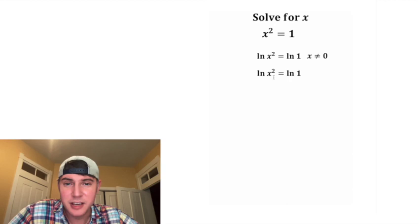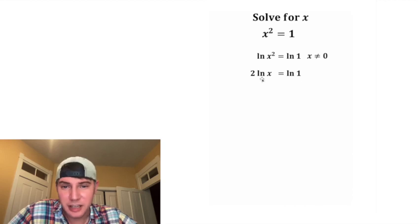One of the properties of logarithms is this exponent can be brought to the front. So we end up with 2 natural log of x equals natural log of 1. The input of a natural log must be positive, so let's make this absolute value of x. It wasn't an issue before because it was being squared, but now it's no longer being squared.